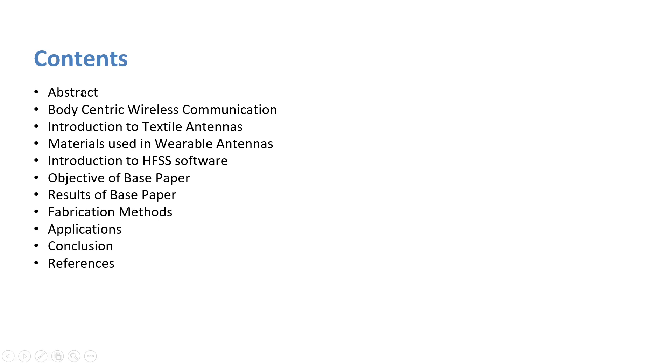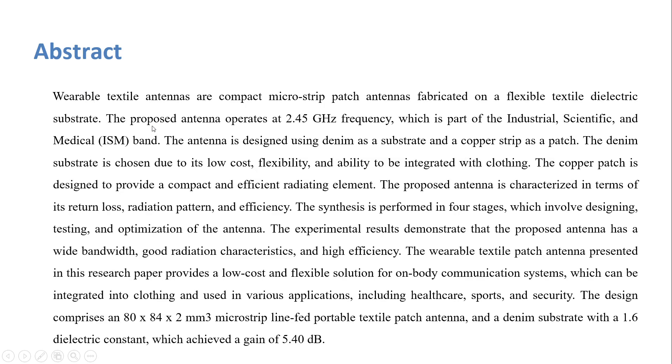The first one is abstract. The wearable textile antenna or compact micro-strip patch antenna is fabricated on a flexible textile dielectric substrate. The proposed antenna operates at 2.45 GHz which is known as ISM band in short. The antenna is designed using denim as substrate and copper strip as a patch. The denim substrate is chosen due to its low cost, flexibility and ability to be integrated with clothing. The copper patch is designed to provide a compact and efficient radiating element.